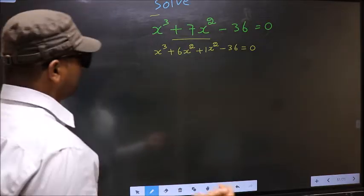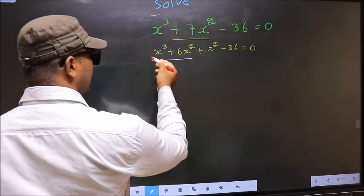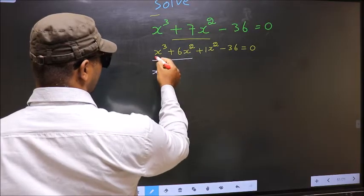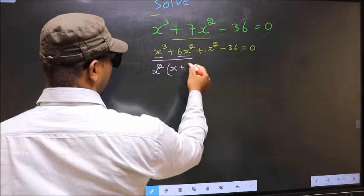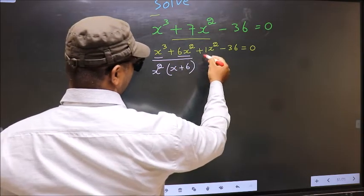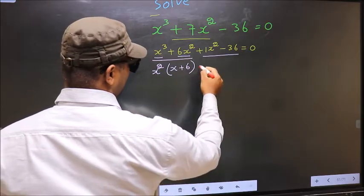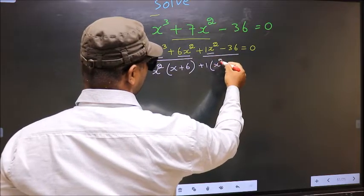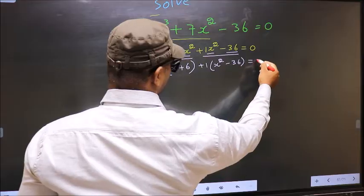Next. Now, from these two terms, what can be taken out common is x square. So, here you get x plus 6. Now, from these two terms, what can be taken out common is plus 1. Here you get x square and here you get minus 36 equal to 0.